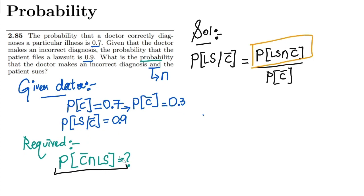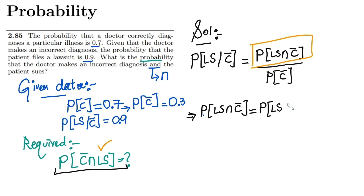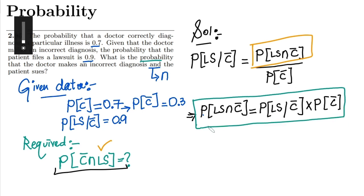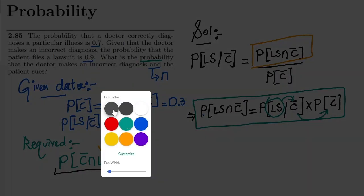We want P(lawsuit ∩ C complement), so multiplying both sides by P(C complement), we get: P(lawsuit ∩ C complement) = P(lawsuit | C complement) × P(C complement). This important relationship is called the chain rule — to find the probability of two related events, we use this formula.